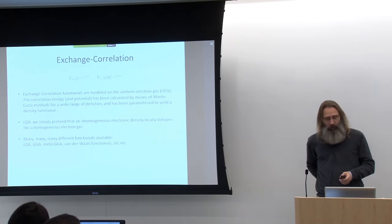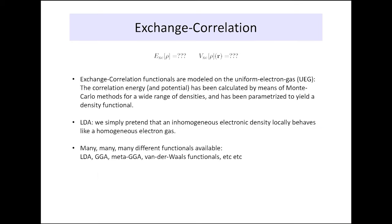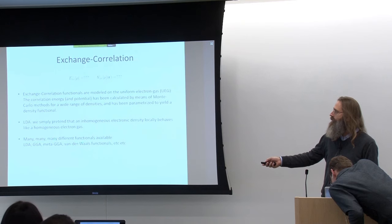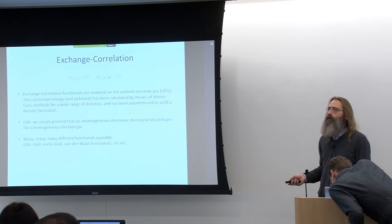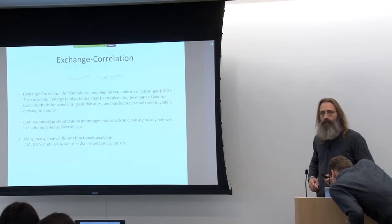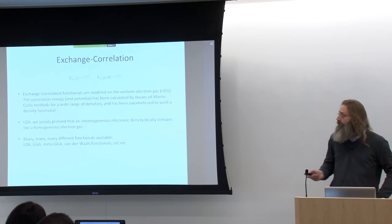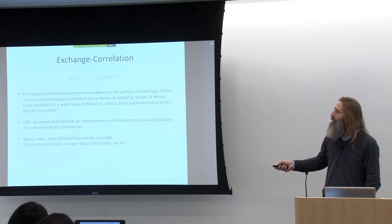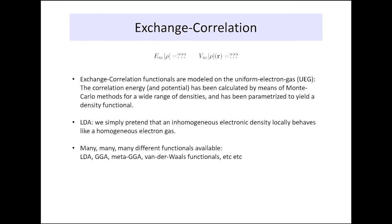In the local density approximation — one of the first and most common approximations — we simply assume that the actual density in our system locally behaves like a uniform electron gas. But many other functionals have been created that take into account other information: not only the local density but also the local gradient in the density for generalized gradient approximations, or the second derivative of the density with respect to spatial coordinates in meta-GGAs. We'll see them come by in the rest of the talks.